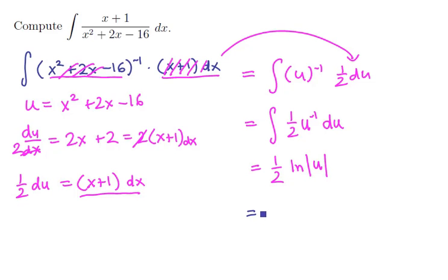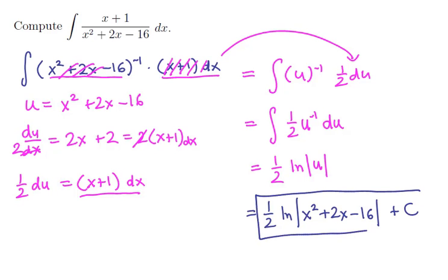If we back substitute using our substitution, we have the antiderivative 1 half ln of the absolute value of x squared plus 2x minus 16, add a constant, and we have every antiderivative. And so there's our answer.